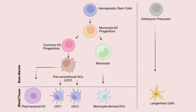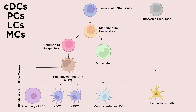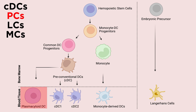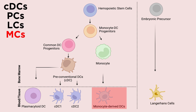However, a combination of ontogeny studies and gene expression profiling have provided some insight into the variation within this cell type. The DC family consists of the following categories: conventional or classical DCs (CDCs), plasmacytoid cells (PCs), Langerhans cells (LCs), and monocyte-derived cells (MCs).